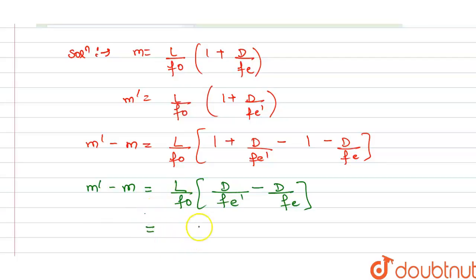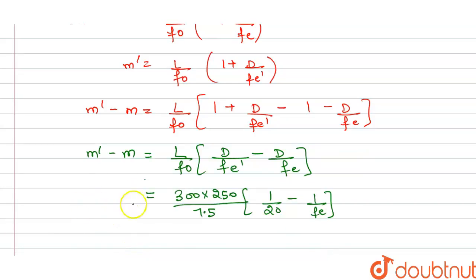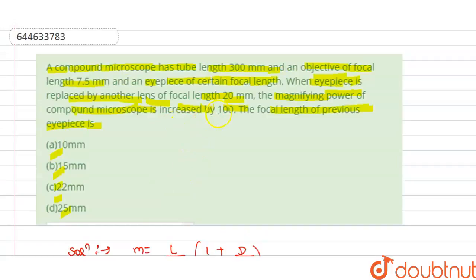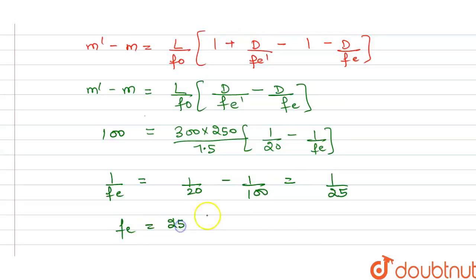Substituting values: L = 300 mm, D = 250 mm, f₀ = 7.5 mm, and fₑ' = 20 mm. The change in magnification is given as 100, so: 100 = (300/7.5) × 250 × (1/fₑ − 1/20). Solving, we get 1/fₑ = 1/20 + 1/100 = 5/100 + 1/100... giving 1/fₑ = 1/25, so fₑ = 25 mm.